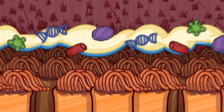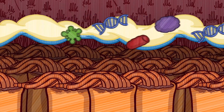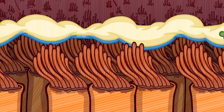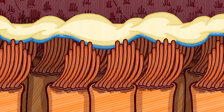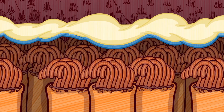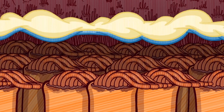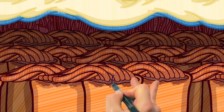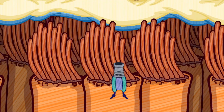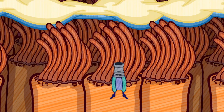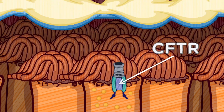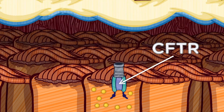Hair-like structures called cilia sweep ASL, clearing debris and protecting against obstruction, infection, and inflammation. A protein called Cystic Fibrosis Transmembrane Conductance Regulator, or CFTR,